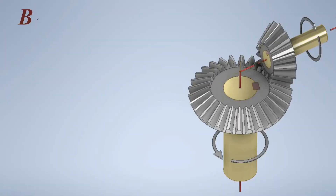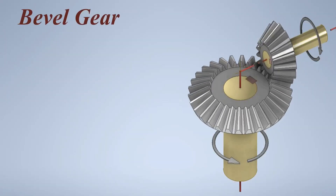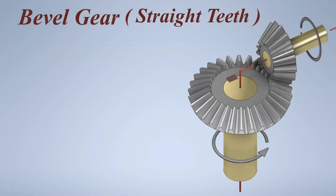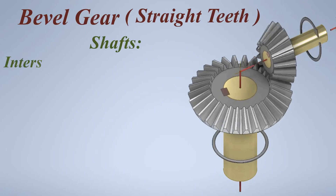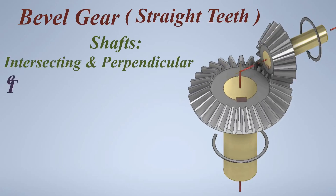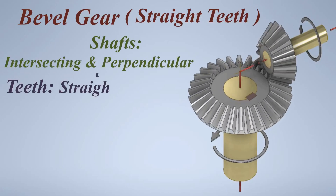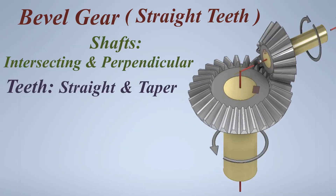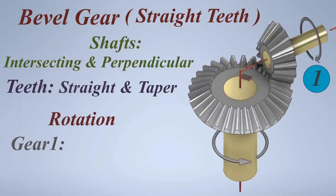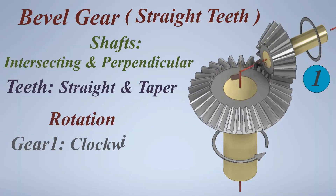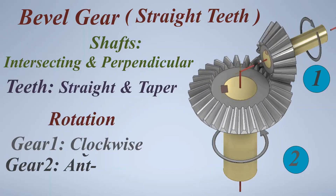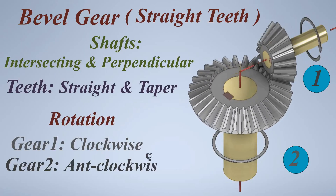Bevel gear — straight teeth. Shafts: intersecting and perpendicular. Teeth: straight and taper. Rotation — Gear 1: clockwise, Gear 2: anticlockwise.